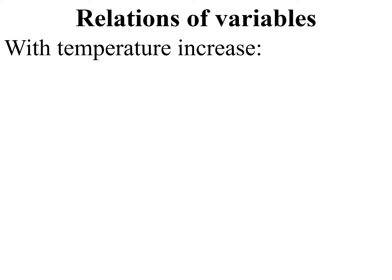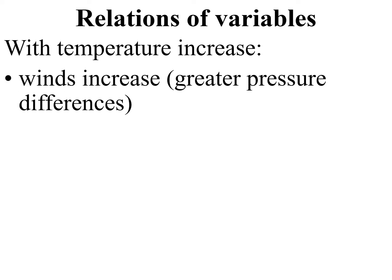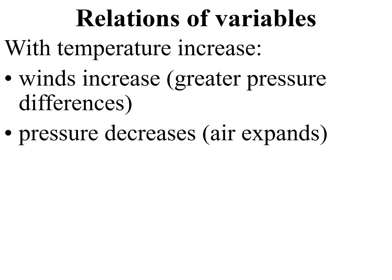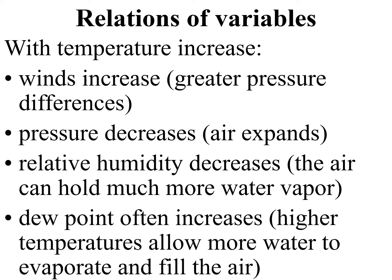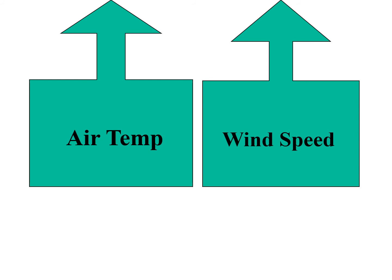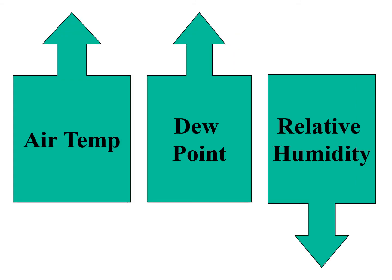Some other variables we can relate: with temperature increase, winds increase — there are generally greater pressure differences. Pressure decreases with temperature increase. Relative humidity decreases with warmer temperatures because the air can now hold a lot more water vapor. Interestingly, dew point will increase — because higher temperatures allow the air to evaporate more water into it. So even though the relative humidity is going down, the dew point, which is a measure of how much water vapor is actually in the air, is actually going up, usually. Air temperature up: wind speed up, dew point up, relative humidity down.